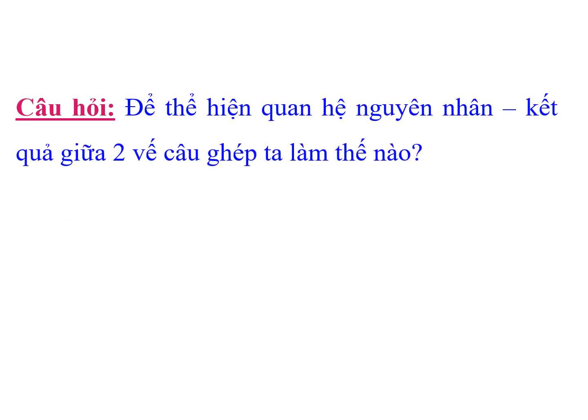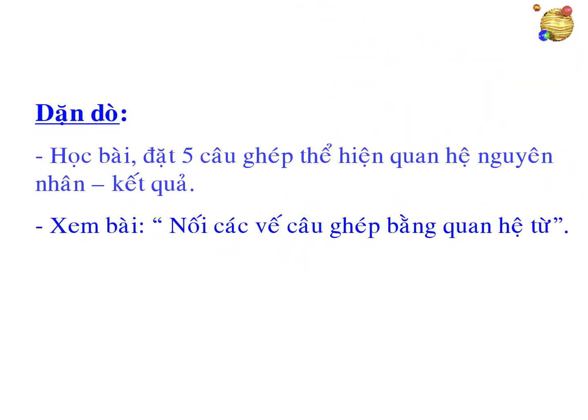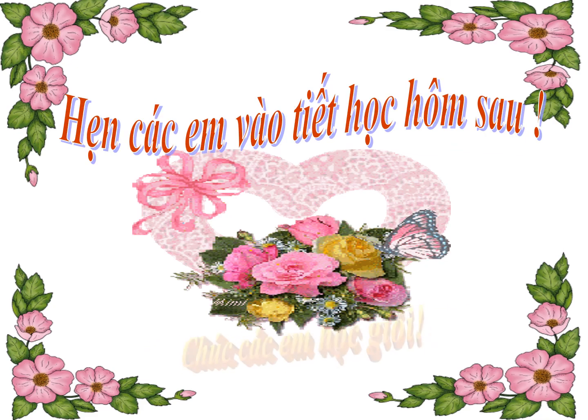Vậy qua tiết học ngày hôm nay, các em đã trả lời được câu hỏi: để thể hiện quan hệ nguyên nhân kết quả trong câu ghép ta phải làm như thế nào. Đó chính là nội dung phần ghi nhớ của bài học ngày hôm nay. Sau tiết học này, các em hãy học bài và đặt cho cô 5 câu ghép thể hiện quan hệ nguyên nhân kết quả. Xem trước bài tiếp theo: Nối các vế câu ghép bằng quan hệ từ. Tiết học của chúng ta đến đây là hết rồi. Hẹn các em vào tiết học buổi sau nhé!